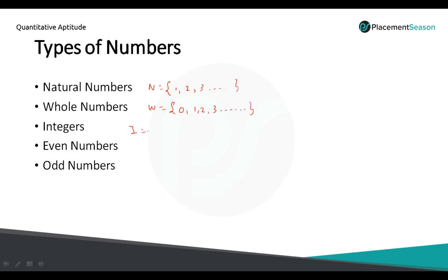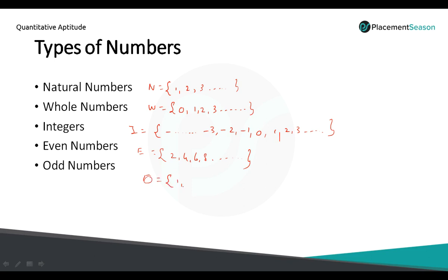For integers, we have both negative as well as positive numbers: minus 3, minus 2, minus 1, 0, 1, 2 and 3 and so on. Even numbers means the number should be divisible by 2: 2, 4, 6, 8 and goes on. Odd numbers are 1, 3, 5, 7 and goes on. So these are some basic types of numbers.